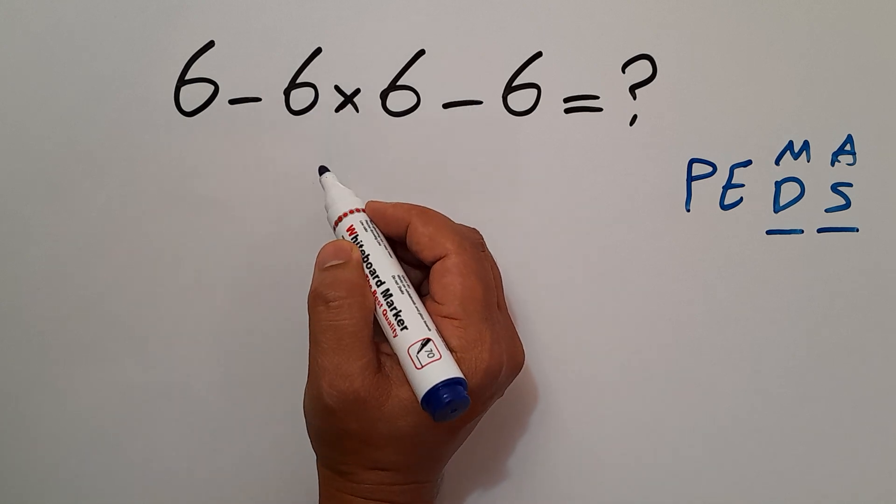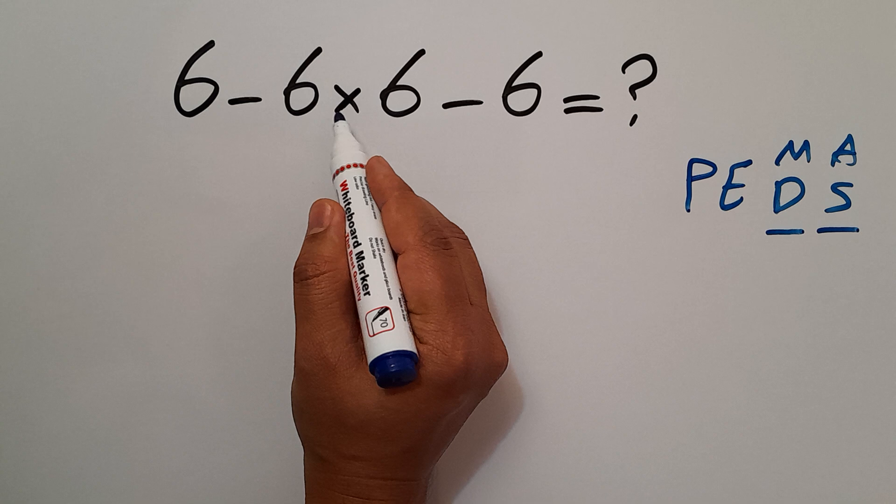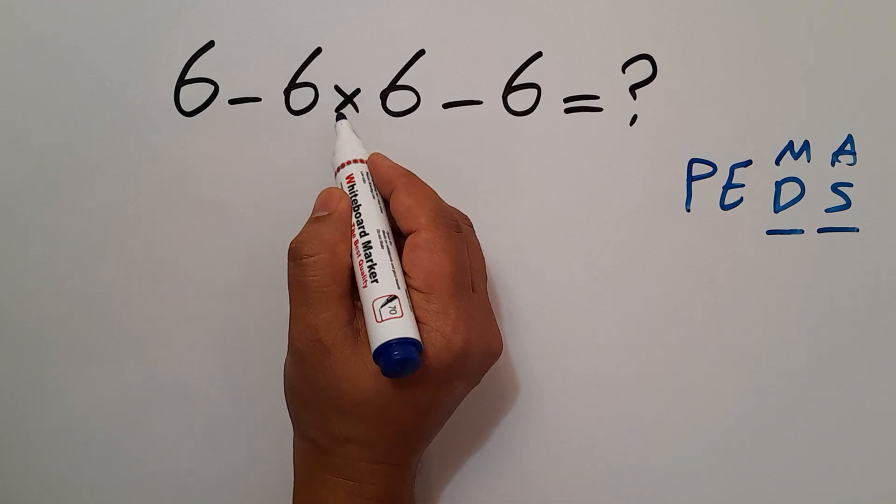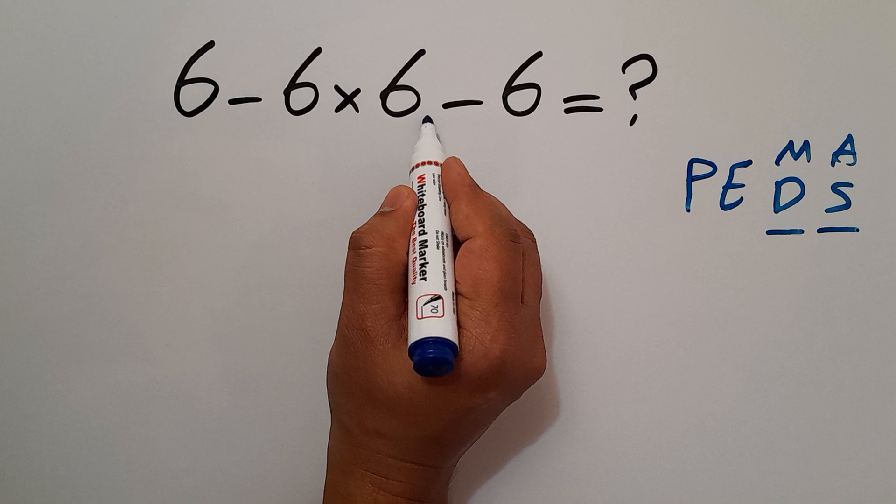So first we do this multiplication: 6 times 6 gives us 36.